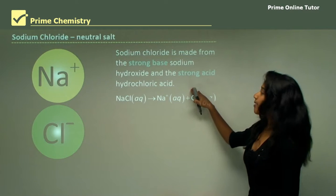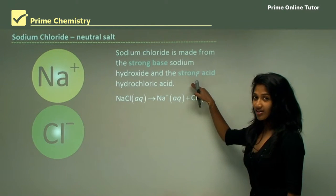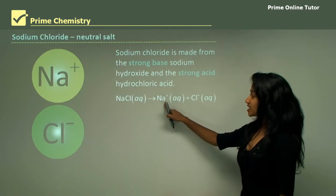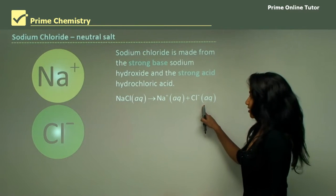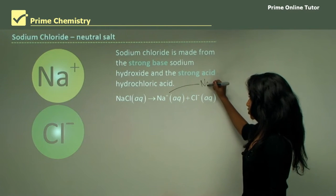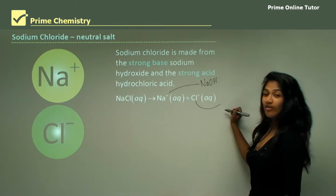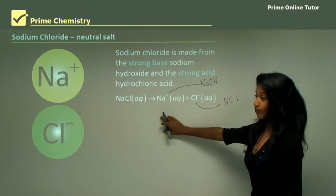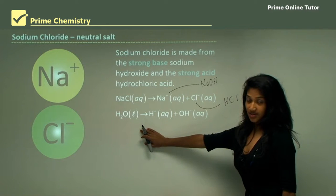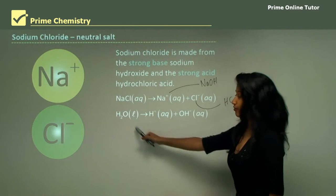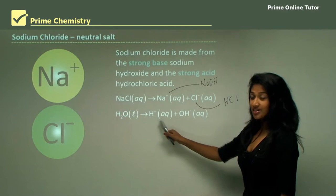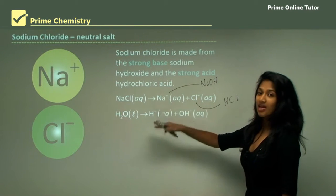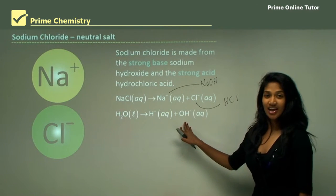NaCl is a neutral salt because both the acid and the base are strong. Sodium chloride gives one sodium ion and one chloride ion — the sodium ion comes from sodium hydroxide, and the chloride ion comes from hydrochloric acid. In aqueous form, water is also present, producing hydronium ions and hydroxide ions.